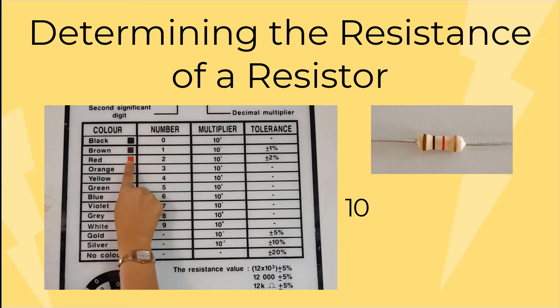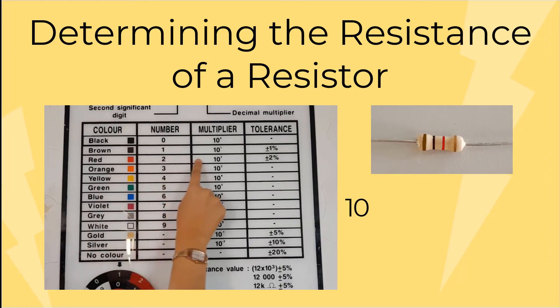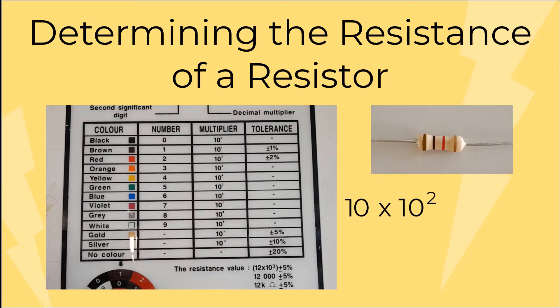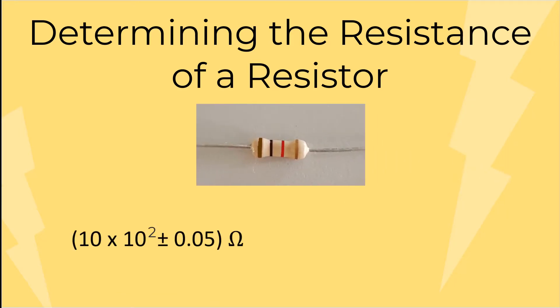The third band is the multiplier. Here, the color is red. From the chart, red is 10 to the power of 2. The fourth band is the tolerance of the resistor. Here, the color is gold. From the chart, gold is 5%. Finally, we can write the resistance of this resistor as 10 times 10 to the power of 2 plus minus 0.05 ohm or 1000 plus minus 0.05 ohm.